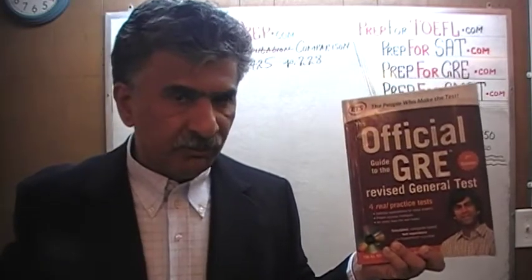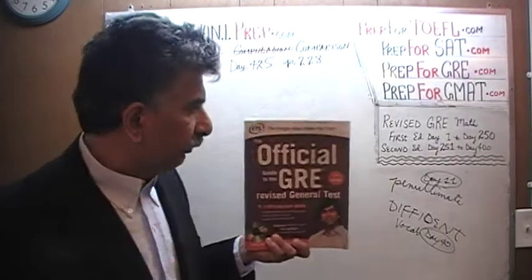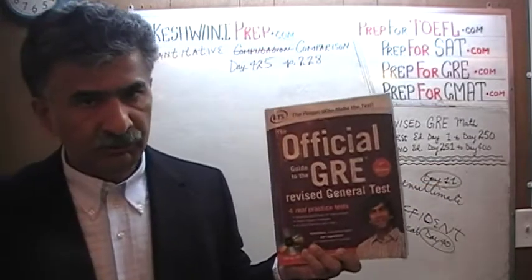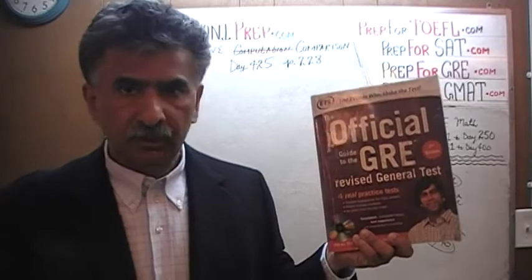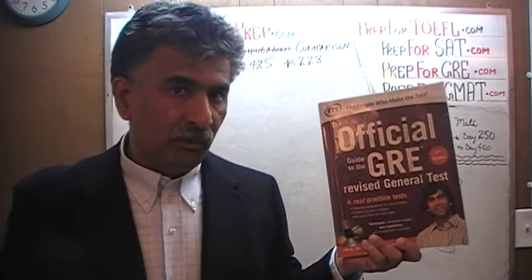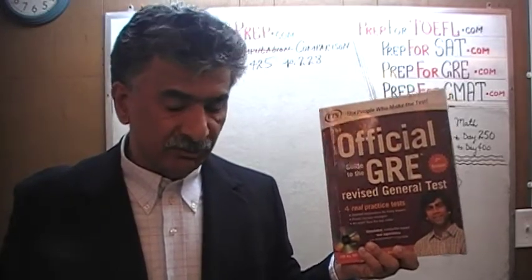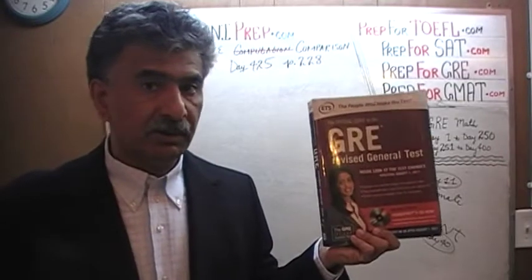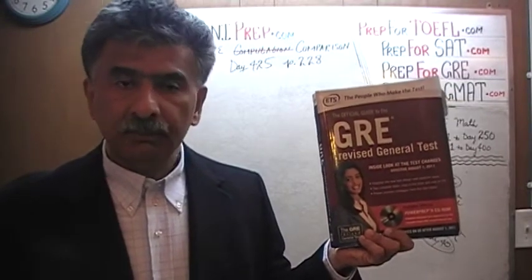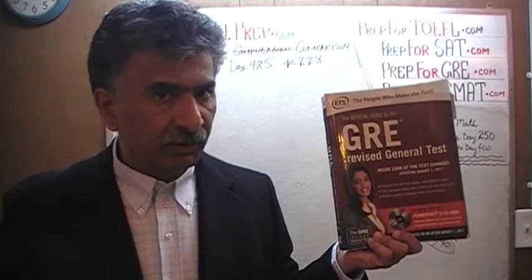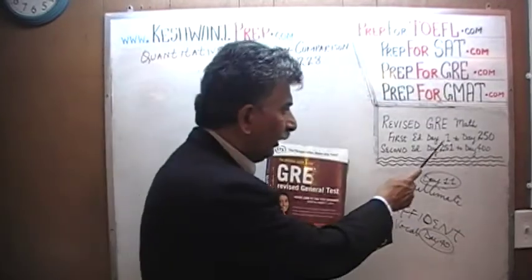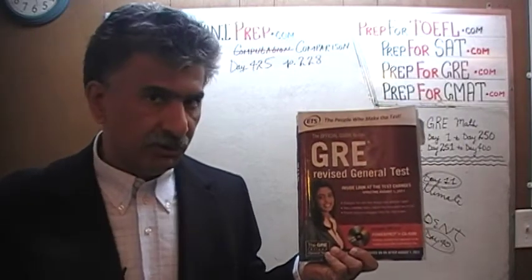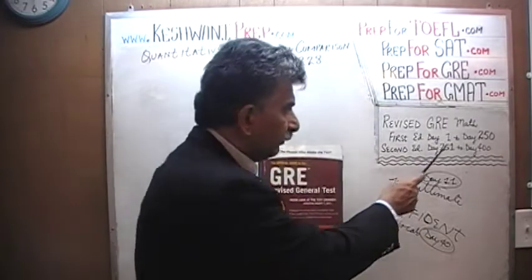Make sure you go through all the math problems in this book. If there is any problem that gives you trouble, you will find the solutions from day number 251 through 400. We are almost finished solving all the problems from this book. This book contains almost exactly the same problems, in most cases on the same page numbers, as the problems that appeared in the first edition of the revised GRE. If you are interested in watching the original solutions, you will find them from day number 1 through 250.